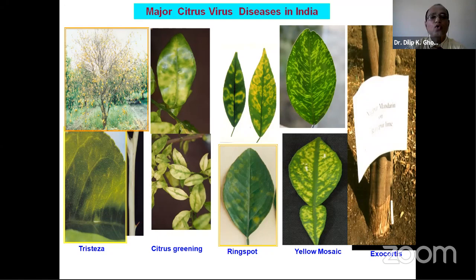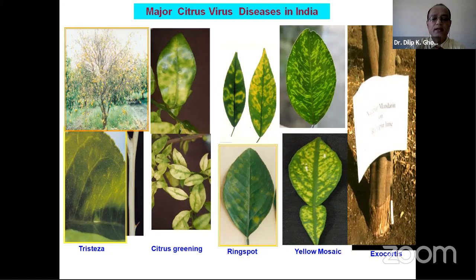Though excellent symptoms can be seen in images, in field conditions such clear symptoms may not be visible. In perennial woody plants like citrus, pathogen concentration remains low and unevenly distributed throughout the canopy, sometimes more concentrated in roots than in twigs. Symptom expression depends on the type of citrus cultivar, the virus strain, and prevailing environmental conditions, hence the need for proper diagnostic tools.